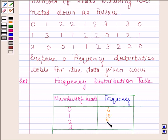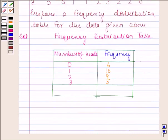Three heads appear 5 times, so frequency of 3 is 5. On adding all these frequencies, we get 30.